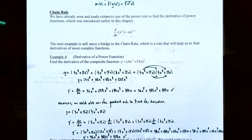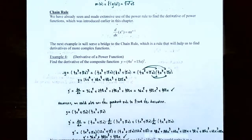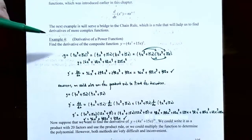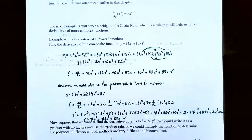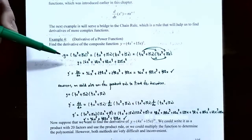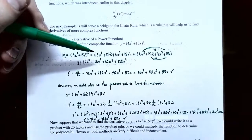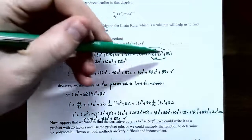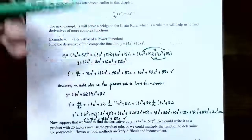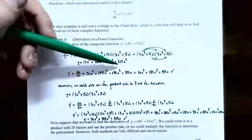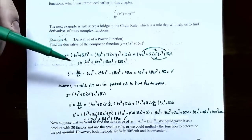The next example serves as a bridge between the chain rule and the power rule we discussed earlier. Example four: find the derivative of the composite function y equals the quantity 4x cubed plus 15x, all to the second power. We have a couple of ways to find this derivative. We can simplify the function first using the FOIL method — writing out (4x³ + 15x)² — and then apply the sum, difference, power, and constant multiple rules.